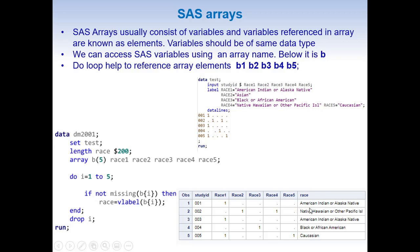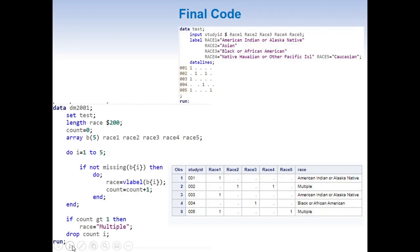Whenever we have more than one non-missing value, the race variable should have the value of 'MULTIPLE'. To do that, I am adding a little extra code. I initiate a new variable: count = 0. Then the logic becomes: if not missing B(i) then do; race = vlabel(B(i)); count = count + 1; end. That means as we loop through each variable, we capture the label and also add 1 to the count for each non-missing value found.